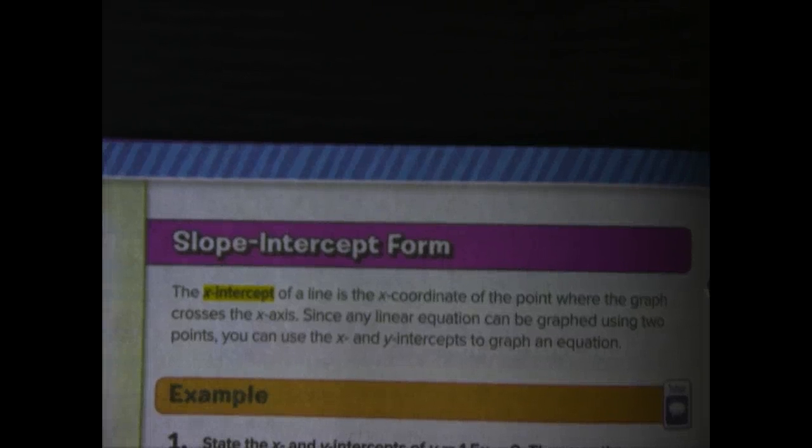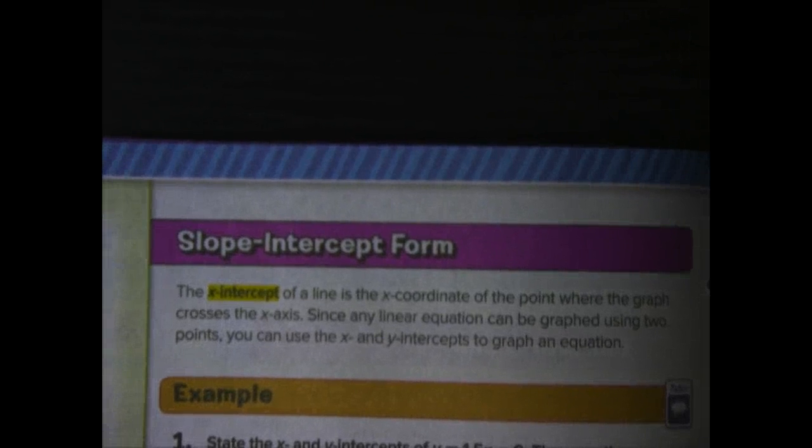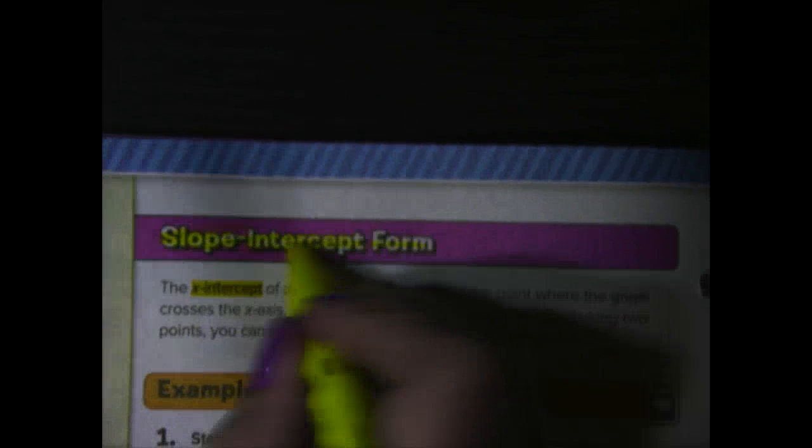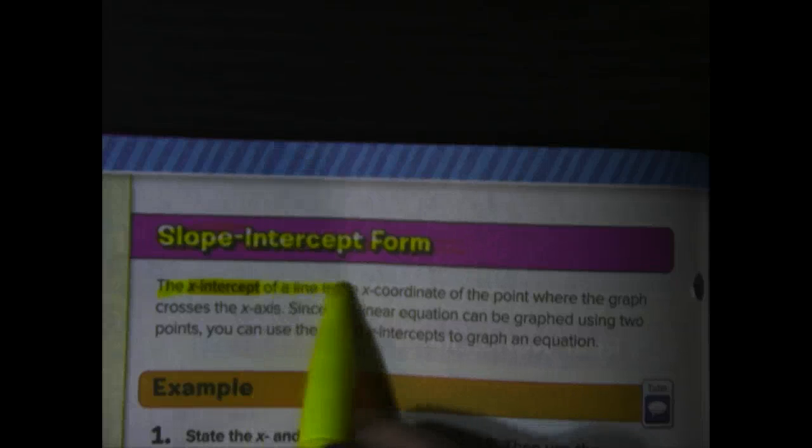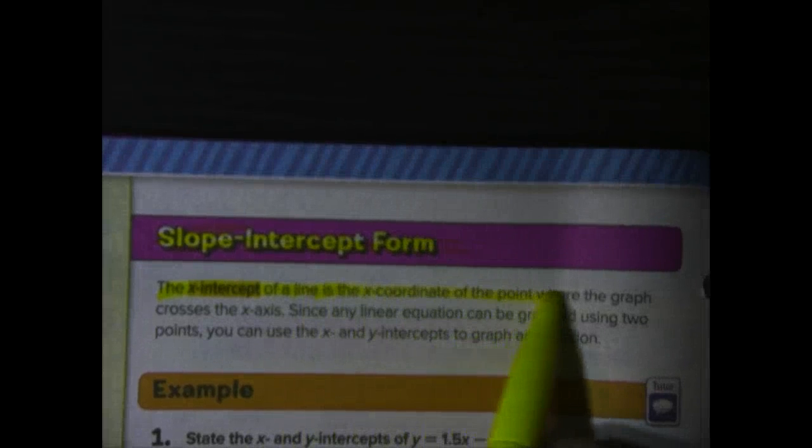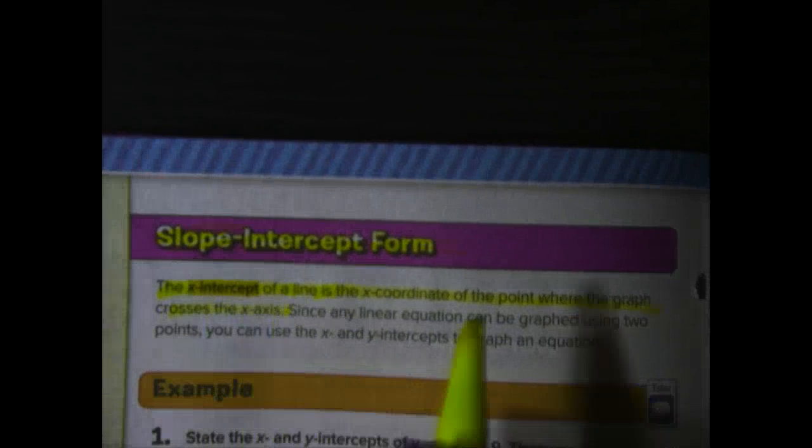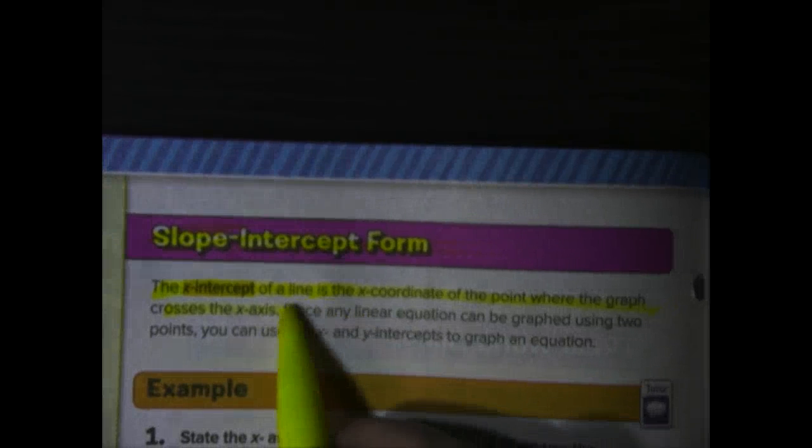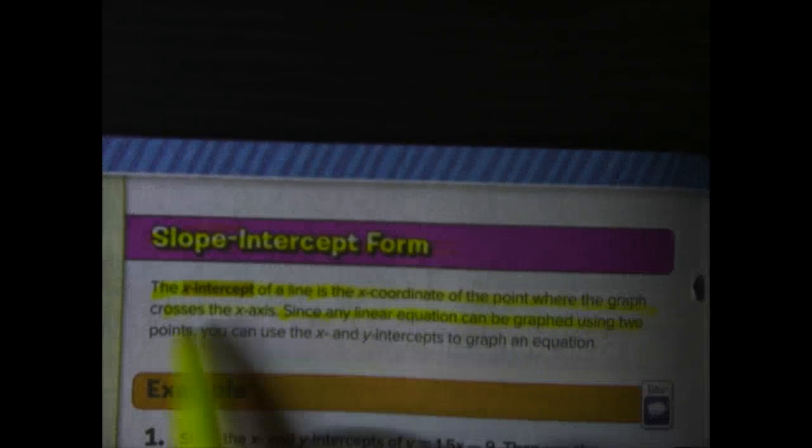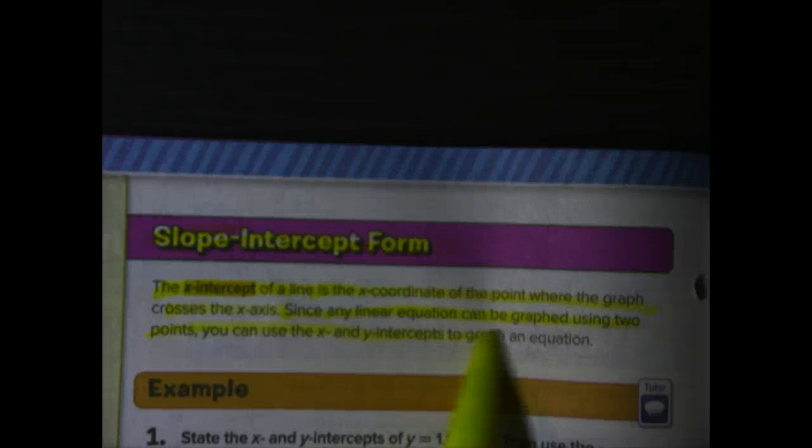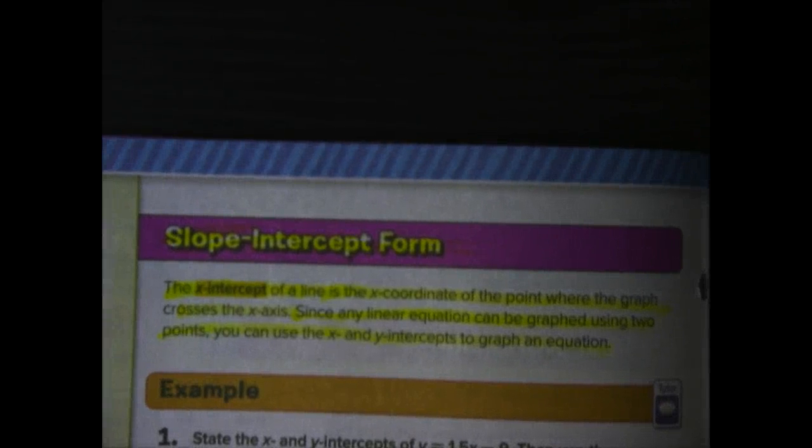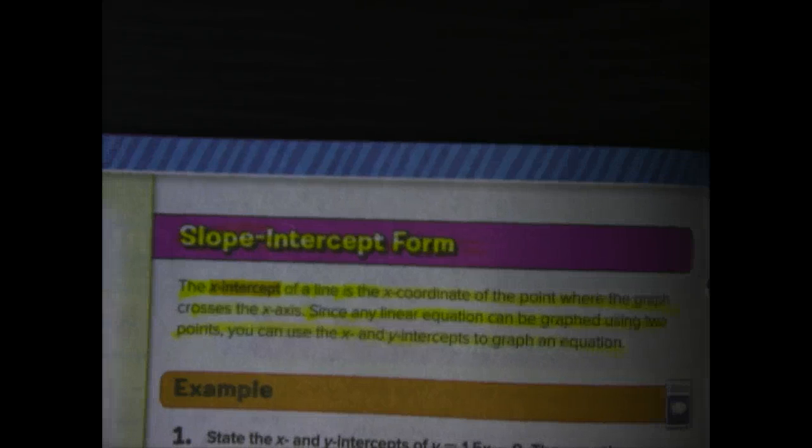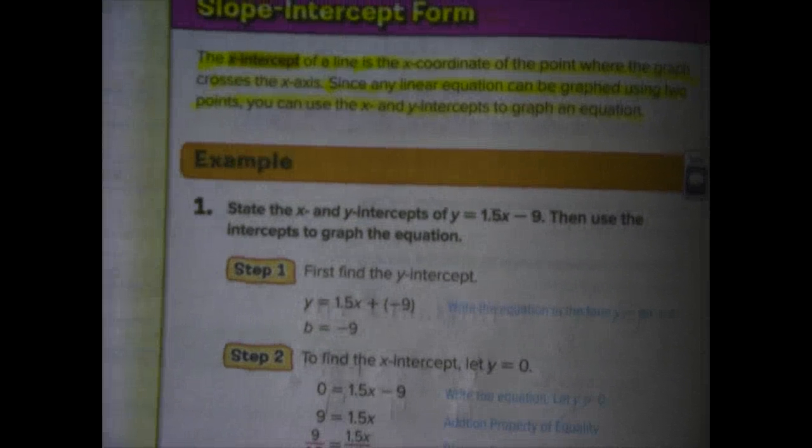At the top of page 210, it says slope-intercept form. Well, we've talked about slope-intercept form already. But this time, we're going to talk not just about the Y-intercept, but the X-intercept. So, the X-intercept of a line is the X-coordinate of the point where the graph crosses the X-axis. Since any linear equation can be graphed using two points, you can use the X and Y-intercepts to graph the equation. So, we're going to learn how to find the X and Y-intercepts in slope-intercept and in standard form.